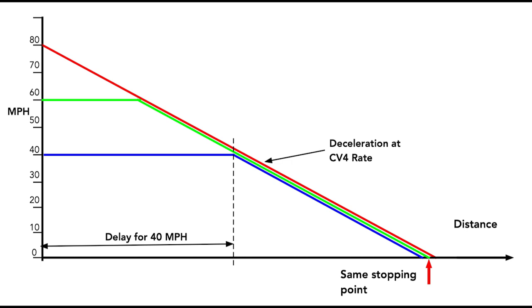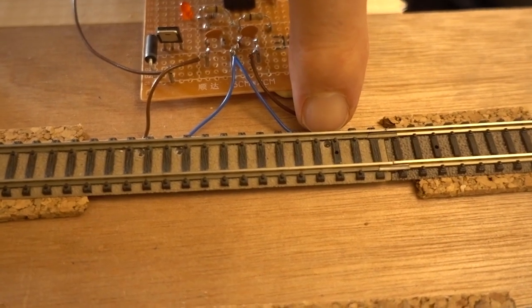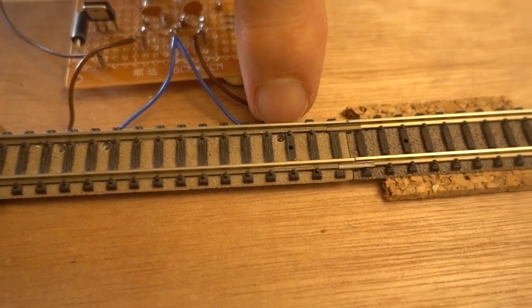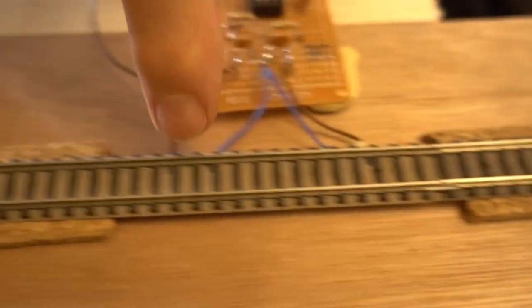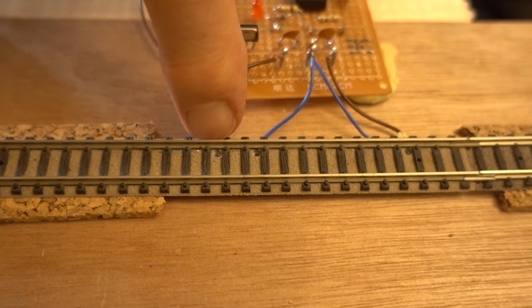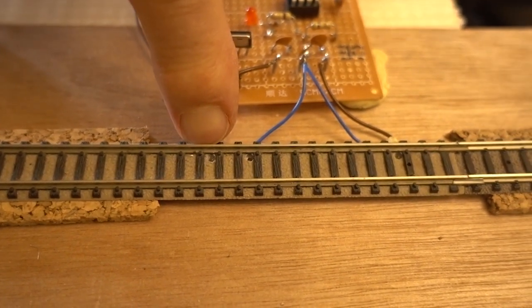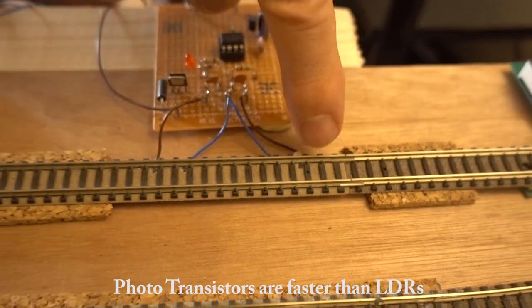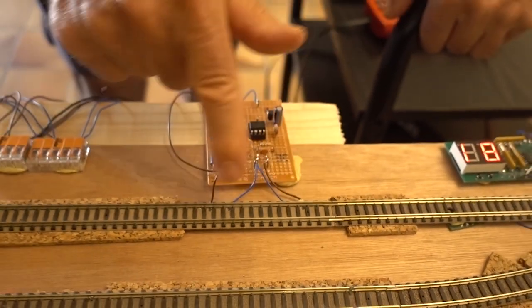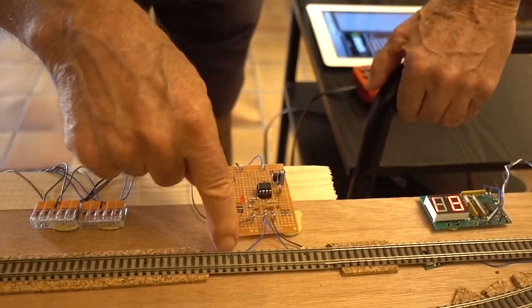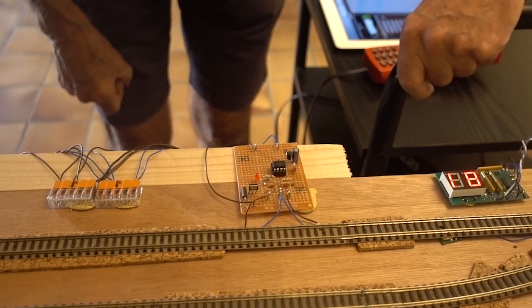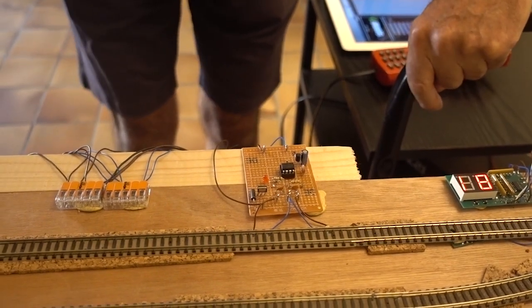But to do this we need to know the speed of the train. There are two photodetectors in the track bed spaced 50mm apart — here's the first one and here's the second. The photodetectors are in fact phototransistors. We measure the time that the train takes between the two photodetectors, and from that we calculate the required delay before we switch on the asymmetric DCC.